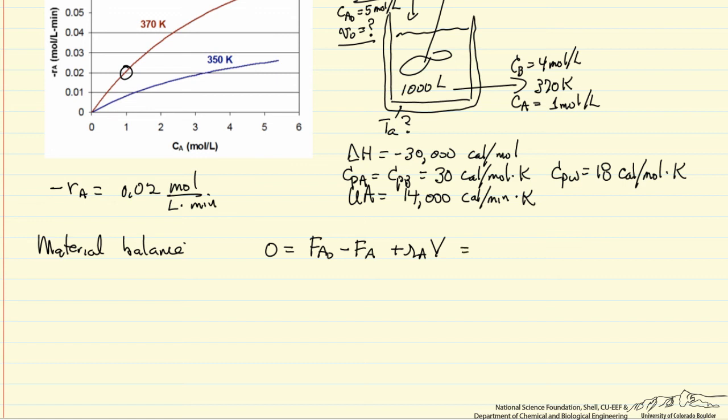And we could also write this as the volumetric flow rate, which we don't know, coming into the reactor, concentration of A. And we're going to assume, liquid phase, that the volumetric flow rate leaving is the same, concentration of A, and we know the rate of reaction and the volume.